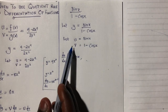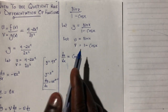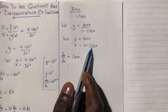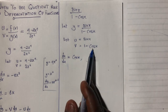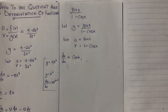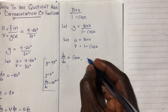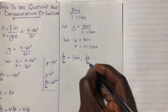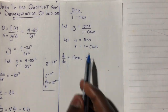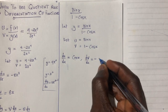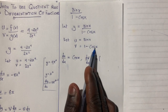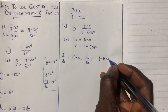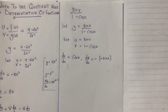Now I differentiate v with respect to x. When I differentiate 1 the result is 0. The differential of cos(x) gives minus sin(x). So dv/dx gives 0 minus (minus sin x), which simplifies — the derivative of cos(x) is minus sin(x).